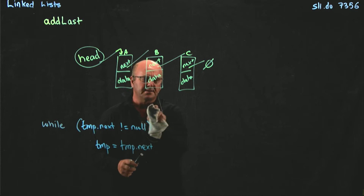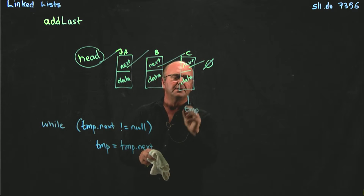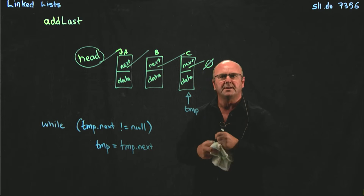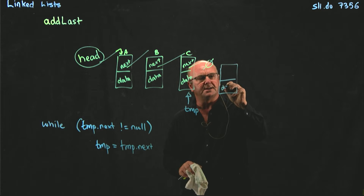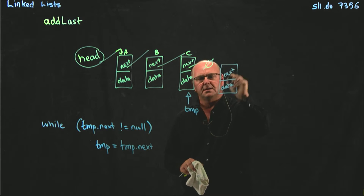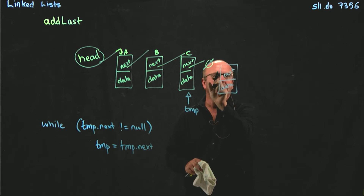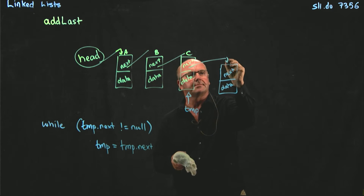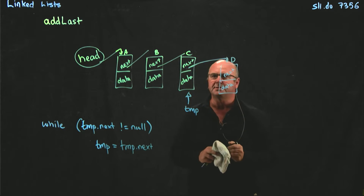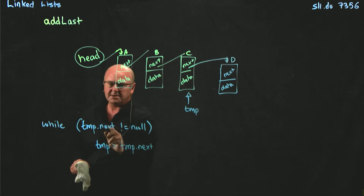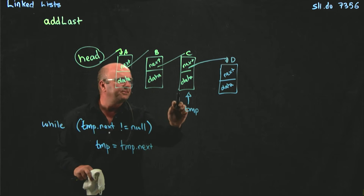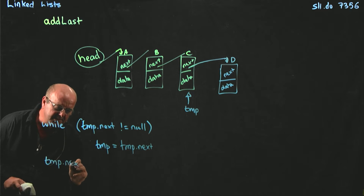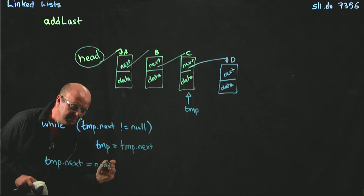We break the link and move temp to point to the next node. At this point, temp.next is null, so now what we can do is take our new node that we've created, and instead of temp.next pointing to null, we want temp.next to point to our new node. So temp.next now points to D. While temp.next does not equal null, we keep going through the list. When temp.next does point to null, we say temp.next is equal to our new node.